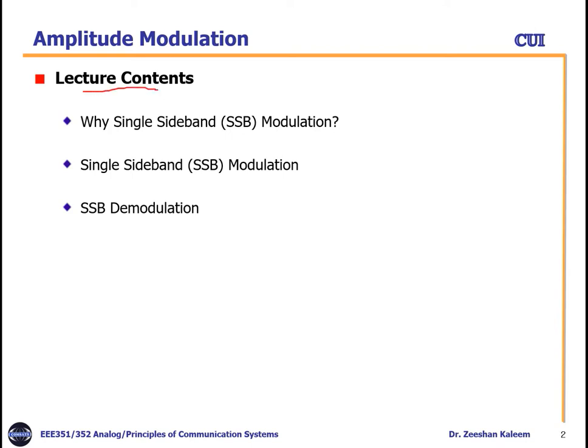First, we will discuss why we require single sideband modulation if we already have amplitude modulation, which is a double sideband modulation. We will also discuss SSB modulation in detail — how the single sideband modulated signal is generated, the difference between conventional double sideband modulation and SSB modulation, and finally, single sideband demodulation.